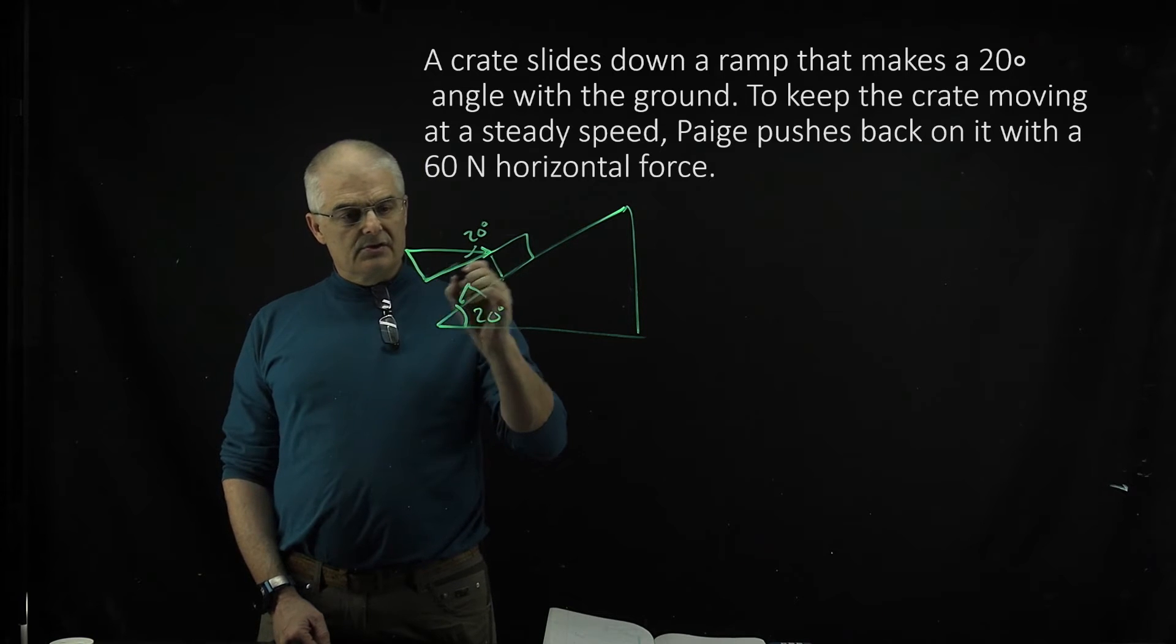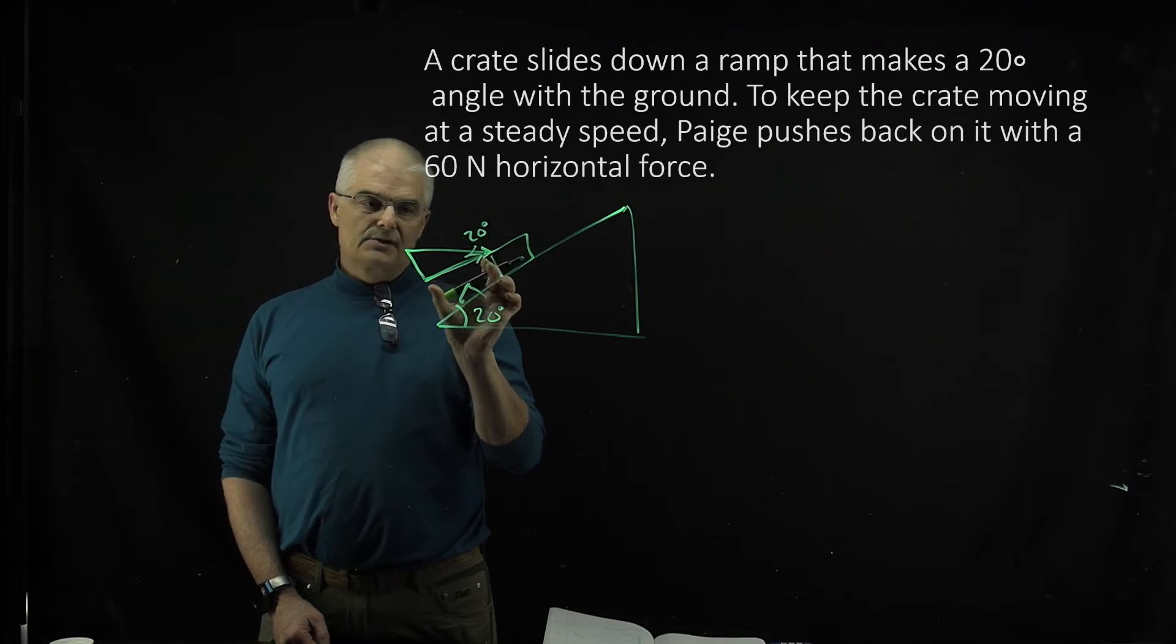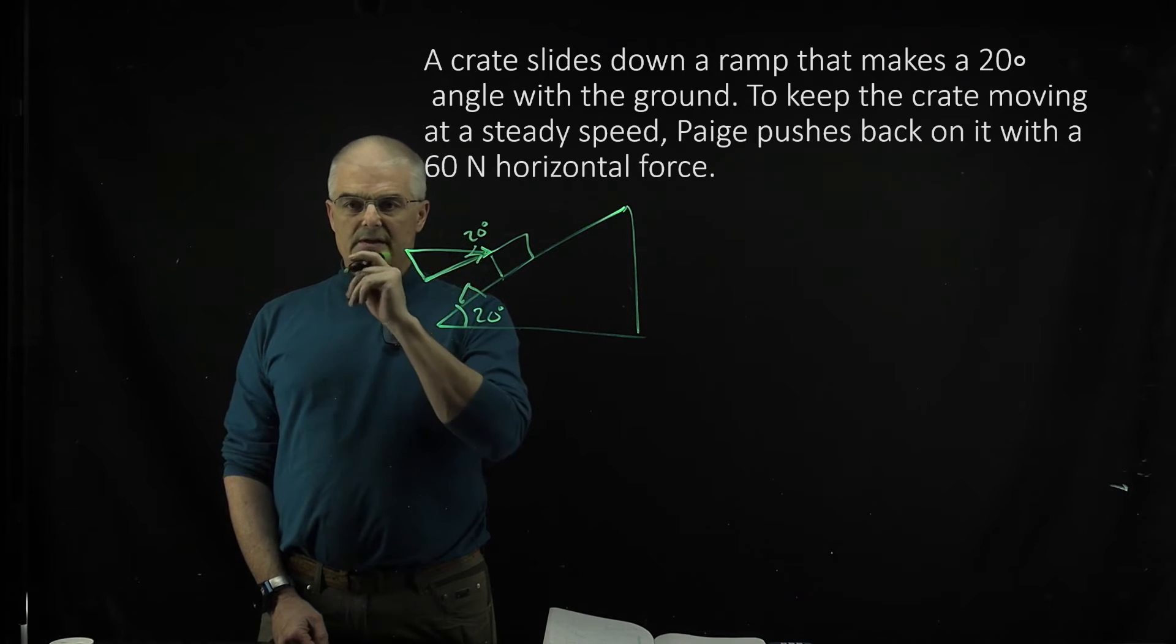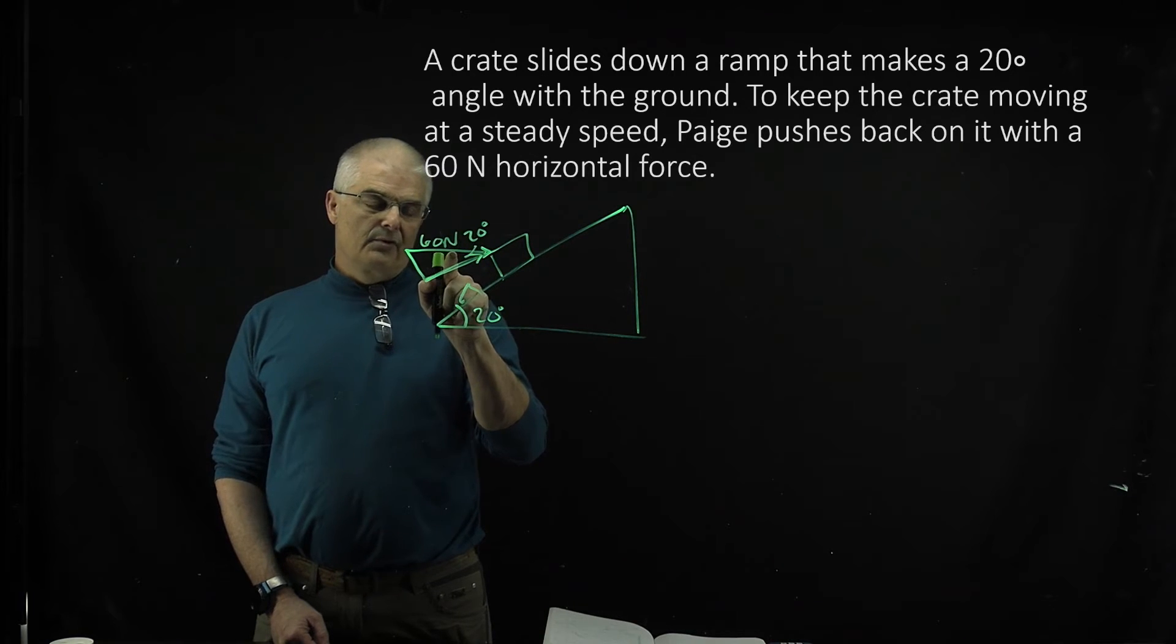So what you need to do is find what the force is going up the ramp. It's just going to be SOHCAHTOA, because we know this was 60 newtons, right? Or you may get a different number. And then once you know the force here,